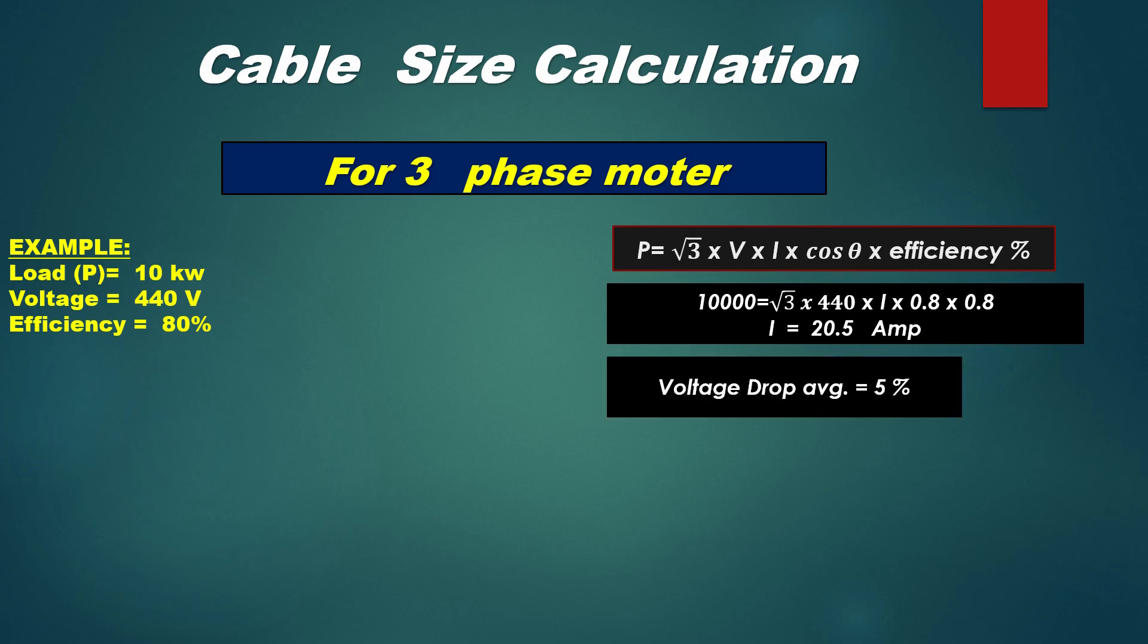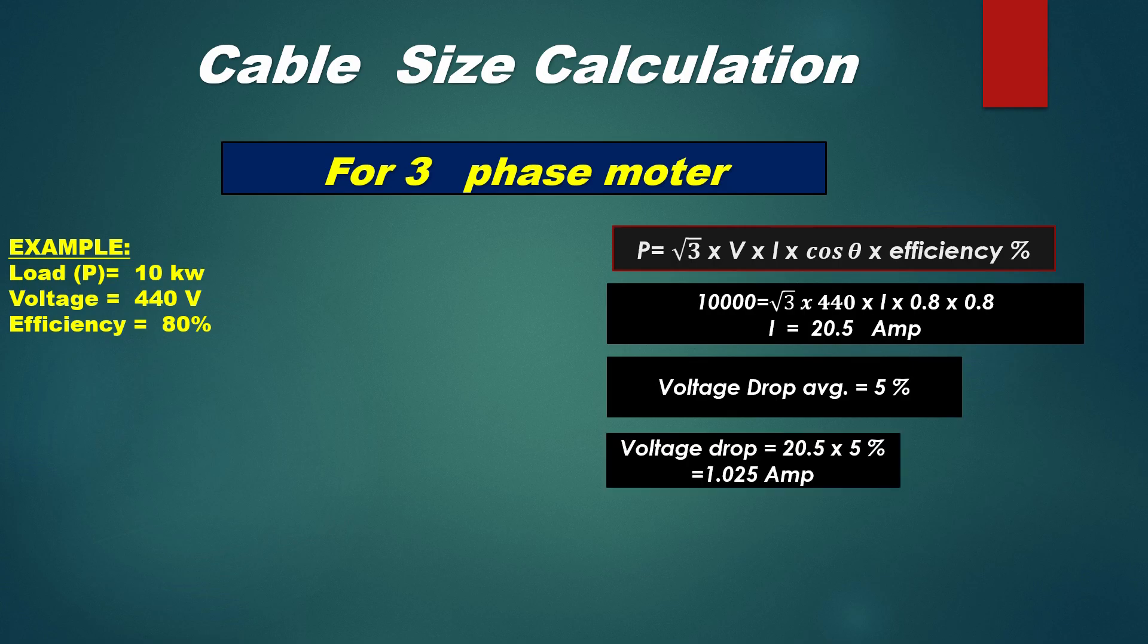Every three-phase motor has 5% voltage drop. So, 5% multiplied by 20.5 ampere. The answer is 1.025 ampere. So, total current is equal to 21.52 ampere.